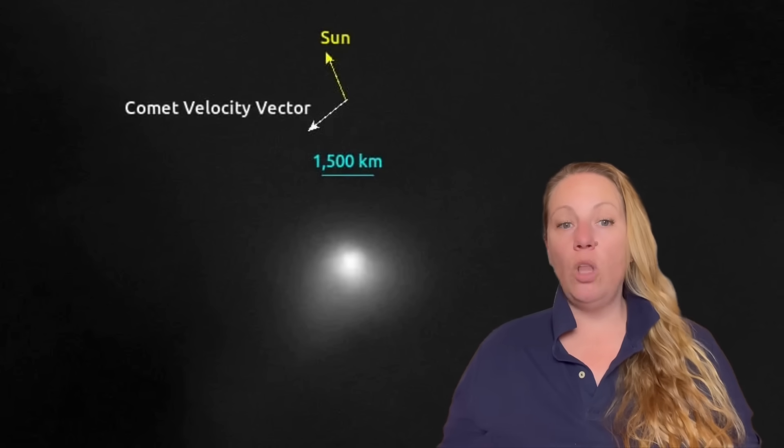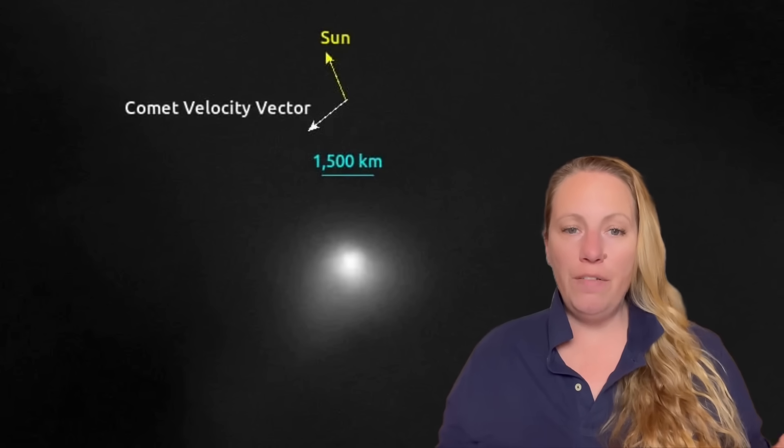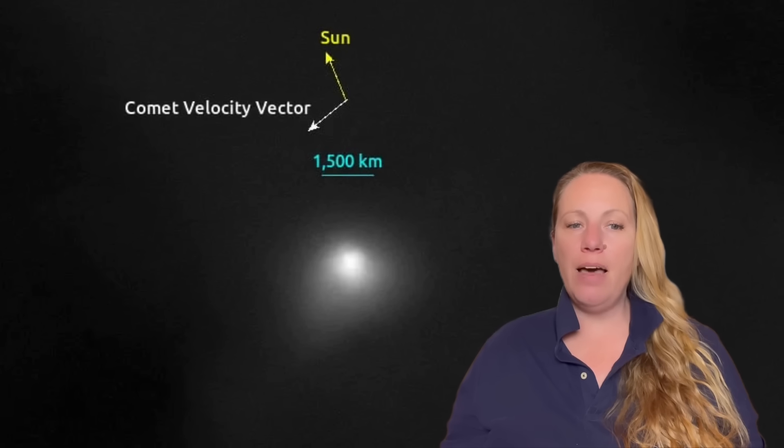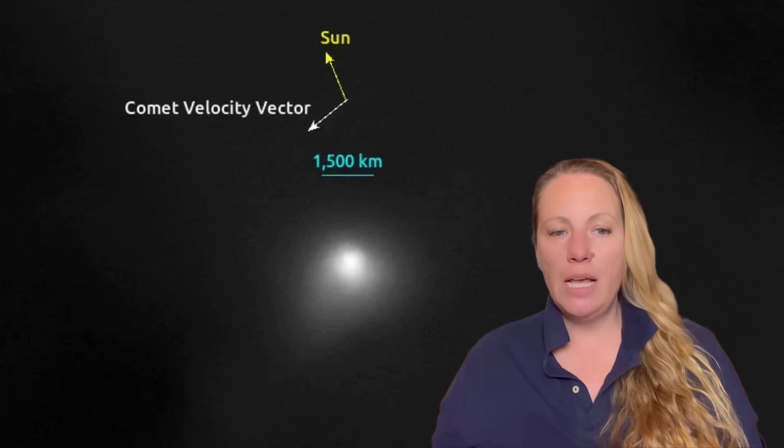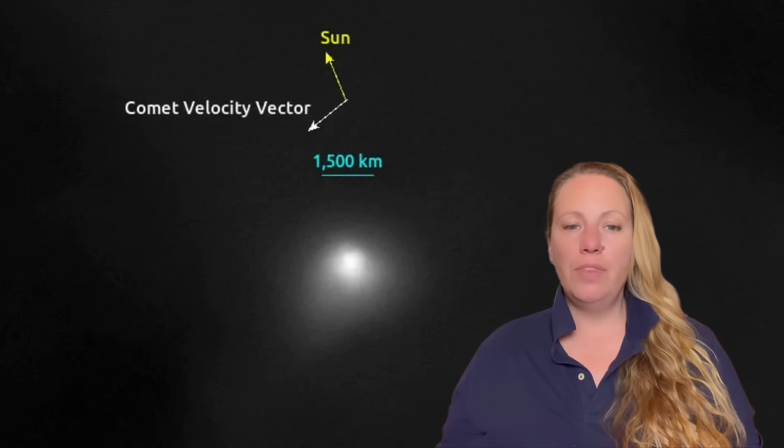So what we see here in this new high-res image, could that be a technological signature of illuminating or clearing the path from any hazardous micrometeorites that may cause damage to a technological object? That's the question that Harvard professor Dr. Avi Loeb has asked.